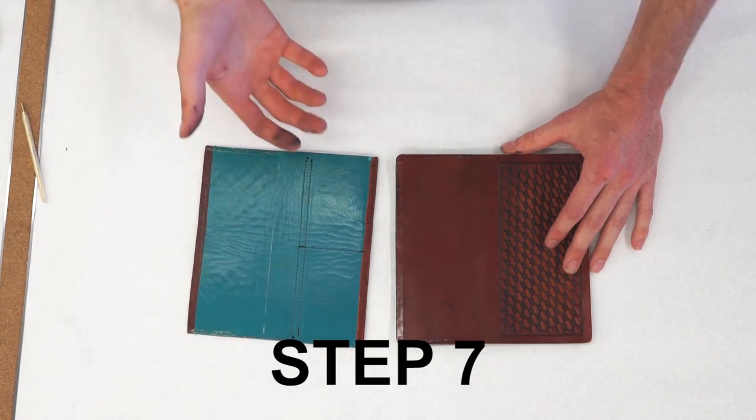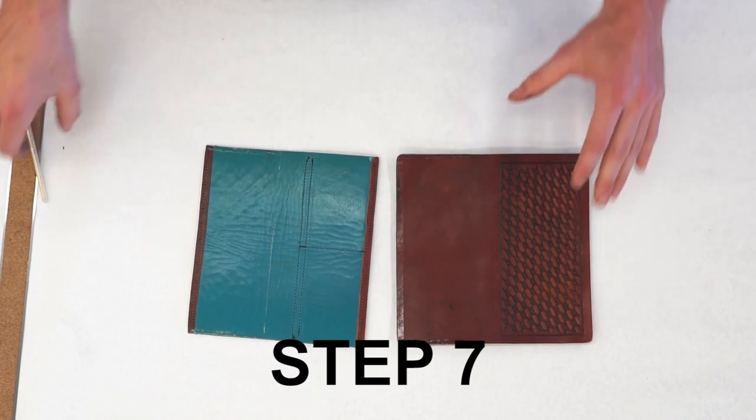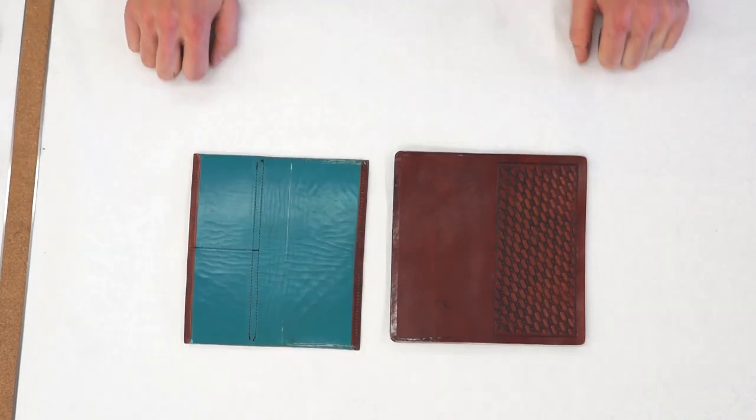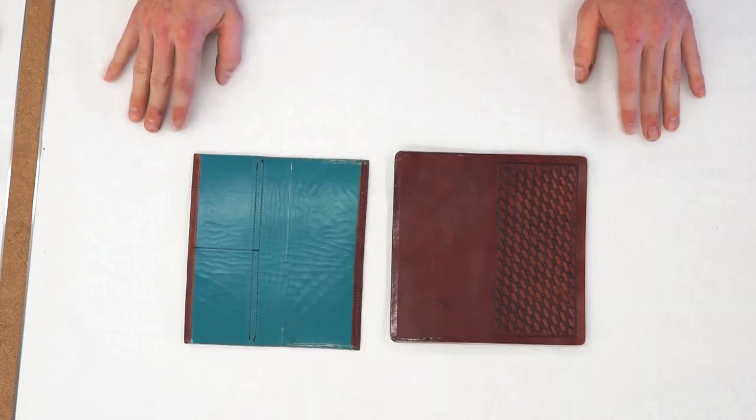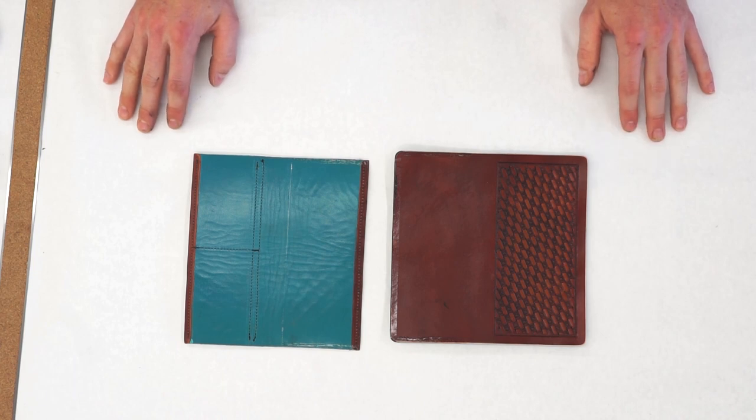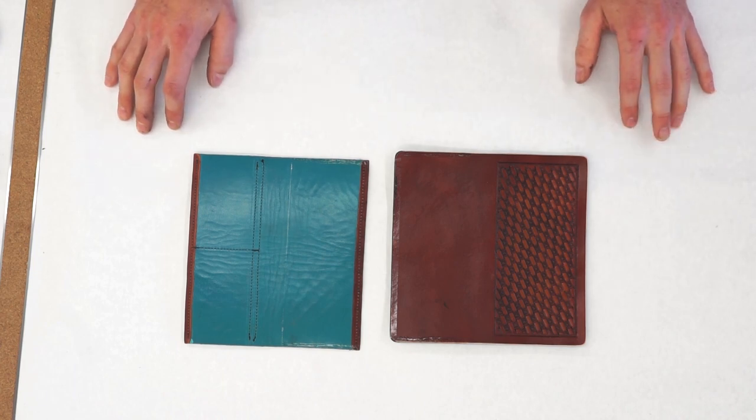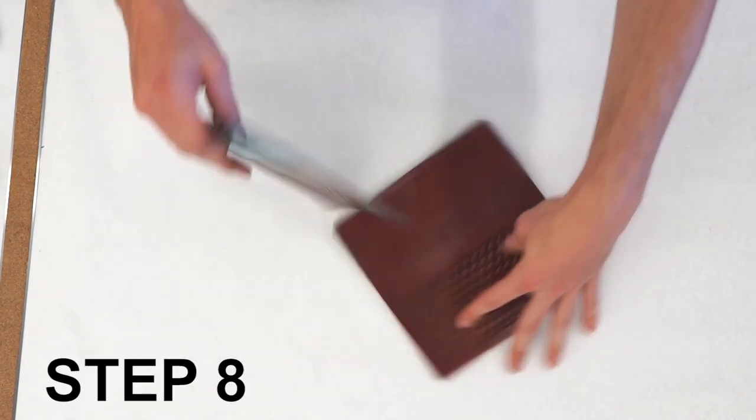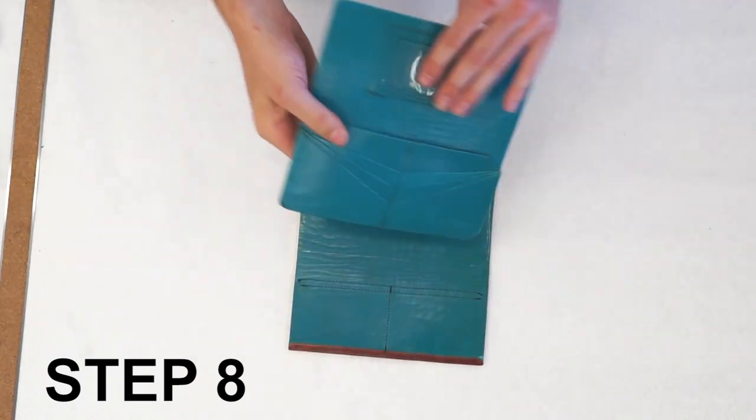If you're using contact cement, you won't have to have it on both surfaces. This is where the cowboy jingles come in. Watching the glue dry. Now once our glue is tacky, we'll go ahead and stick our back down, just like so.